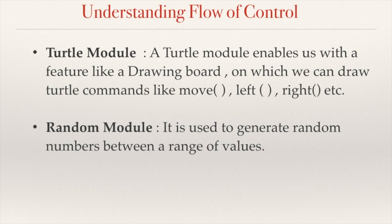To understand flow of control, in this class we will take help of two Python modules: the turtle module and the random module. The turtle module will enable us to draw something on a screen and the random module will help us to generate random numbers between a lower limit and upper limit. A module is a collection of ready-made pieces of code called functions which have certain specific tasks to perform in a program. Let us first understand the concept of sequential flow by observing a code example.